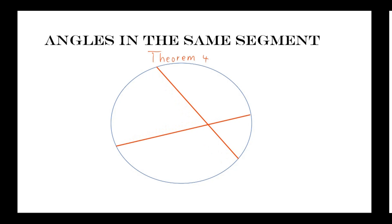Let's draw this and see what it means. We label our diagram as A, B, C, and D. Theorem 4 states that if you have angles that are in the same segment in a circle, then those angles are equal — or you can say that angles subtended by the same chord or arc of a circle are equal. Looking at this arc here, this theorem says that angle A is equal to angle B.